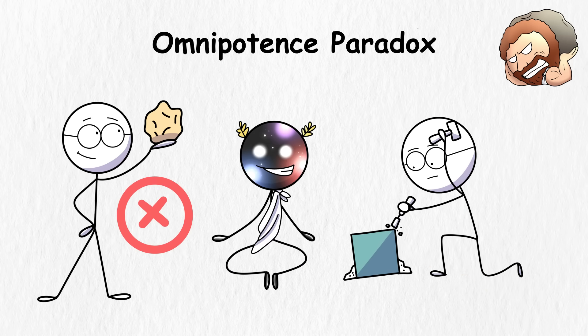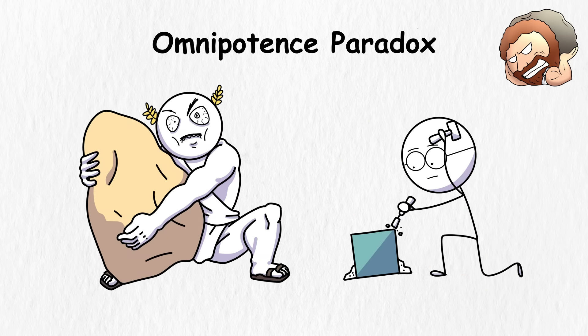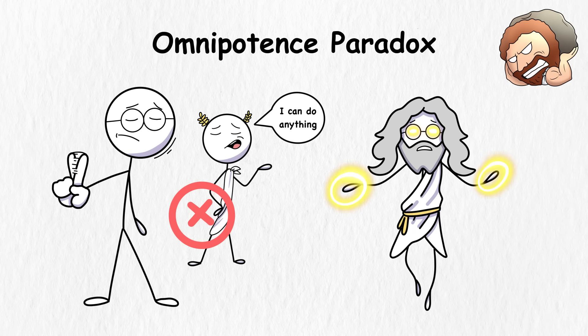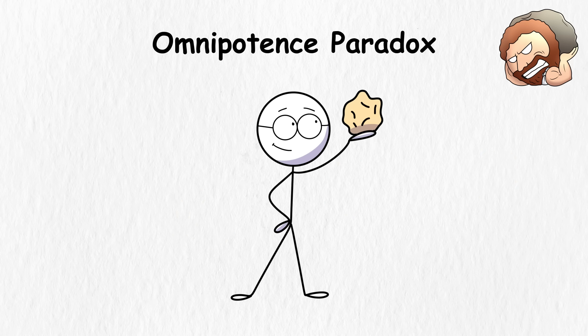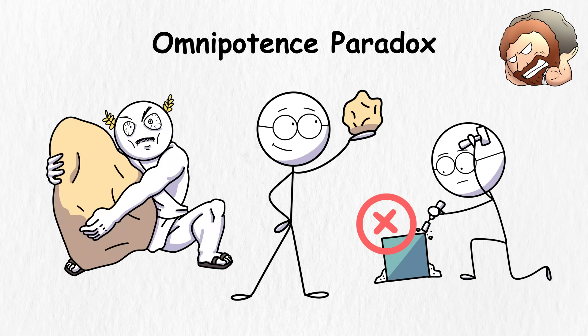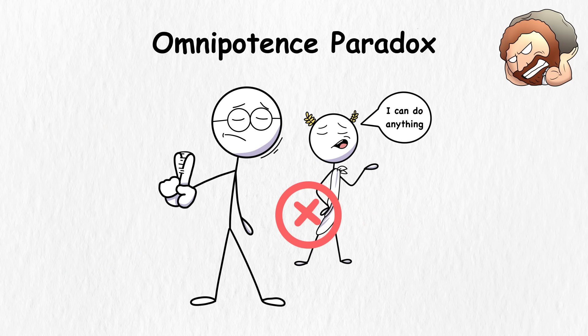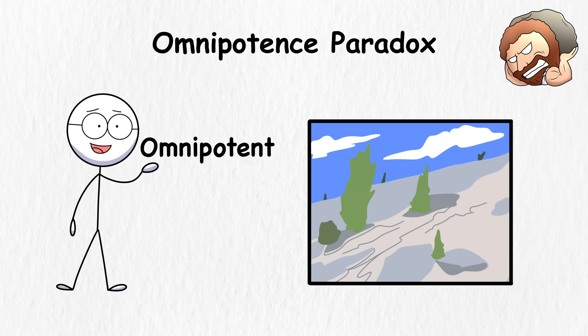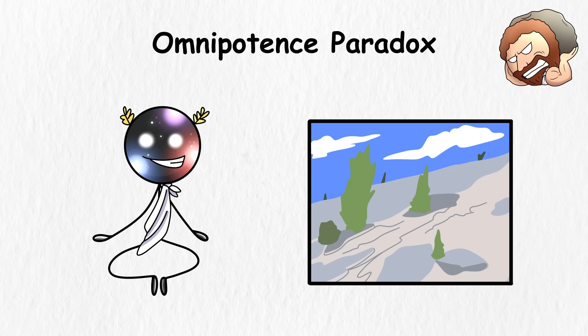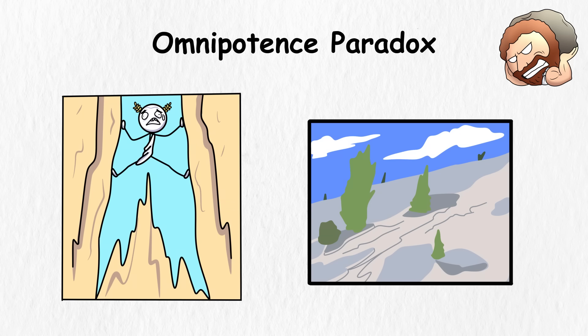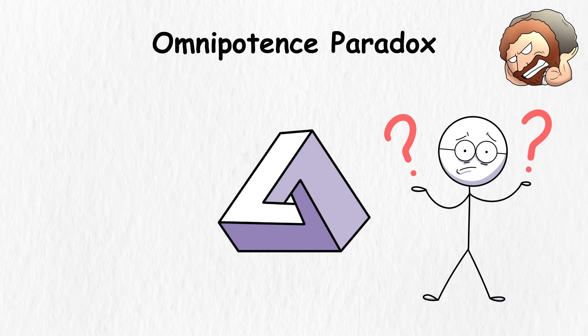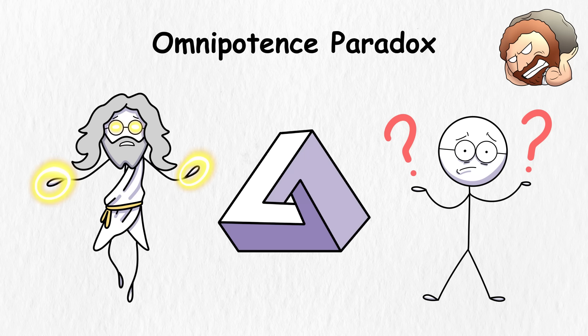If this being could create a rock that not even his divine muscles could lift, that would mean he's not all-powerful. After all, a perfectly powerful being should be able to lift anything. But if he can't create a rock that's impossible to lift, that would mean he can't create anything, defeating the meaning of omnipotent. It's now a rocky situation for this being, and he's stuck between a rock and a hard place.